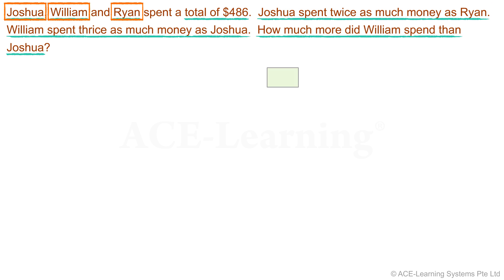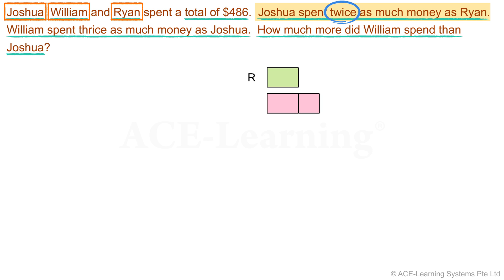Here's one unit to represent the amount Ryan spent. Let's use R to represent Ryan. As for Joshua, he spent twice as much money as Ryan. Since we represent Ryan's amount as one unit, Joshua would be two units. Here are two units to represent the amount that Joshua spent. We will use J to represent Joshua.